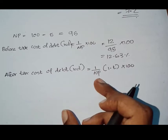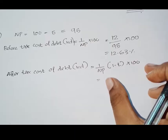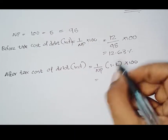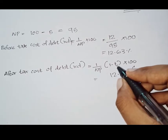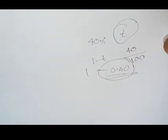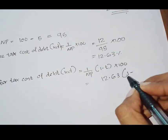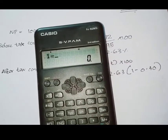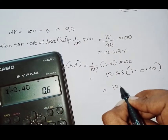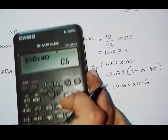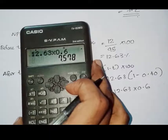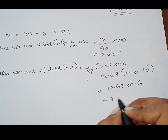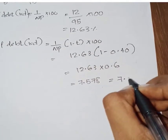After-tax cost of debt for Case 2: 12.63 into 1 minus T. Tax rate is 40%, so 1 minus 0.40 equals 0.6. Therefore, 12.63 into 0.6 equals 7.578%. The after-tax cost of debt for Case 2 is 7.578%.